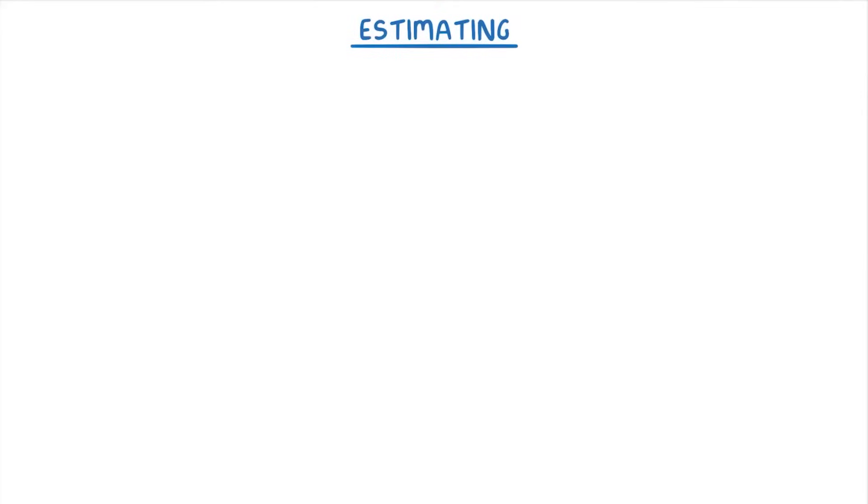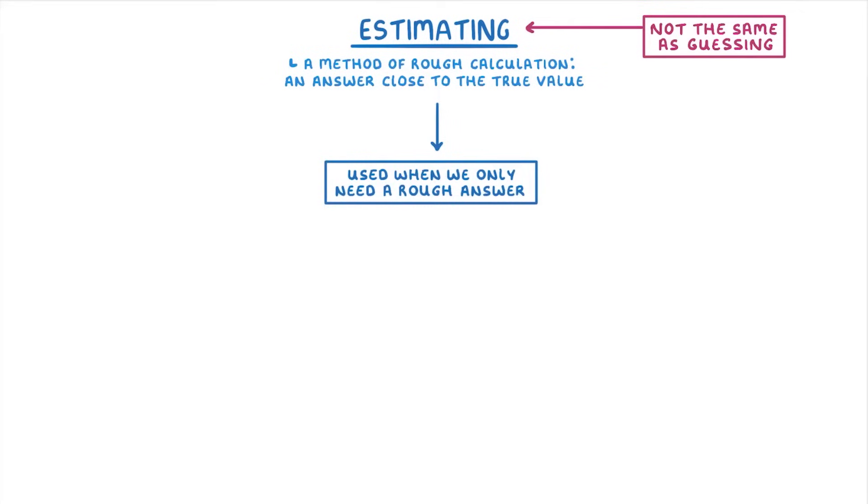Now, the first thing we need to get clear is that estimating is not the same as guessing. The idea is that estimating is a method of rough calculation that gives us an answer that's close to the true value, but probably not exactly correct. Estimating is normally used when we only need a rough answer, or if we want to check that our fully worked answer is in the right ballpark.